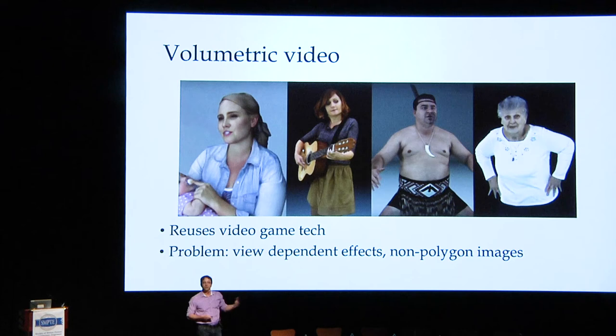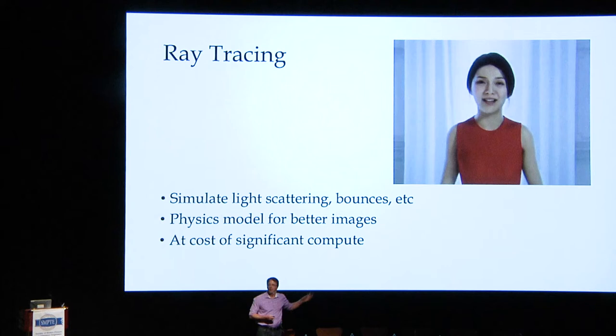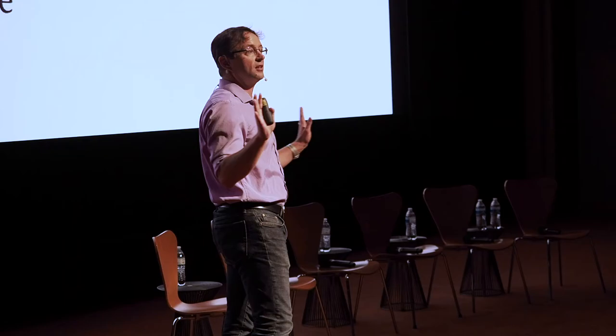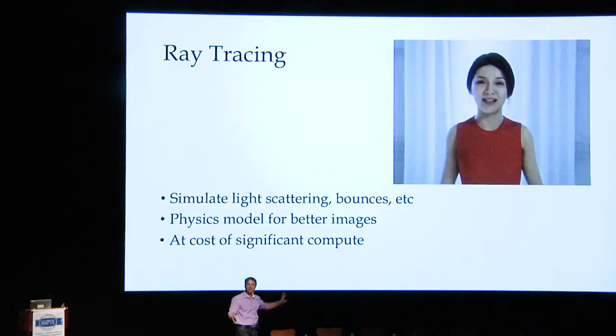The next step up would be ray tracing — an extension of video game technology. The premise is you have a very high-fidelity model and you don't just cast rays against a polygon and return some value; you actually cast the ray and let it bounce around a bit and do some calculations. It's a much more sophisticated calculation model, and this is within reach of Moore's Law with dedicated circuitry, and we're starting to see some realistic things happen there.